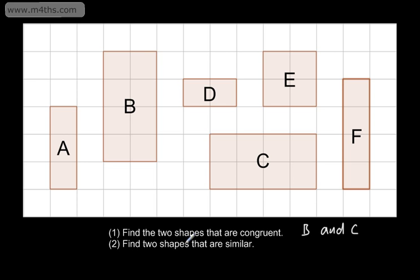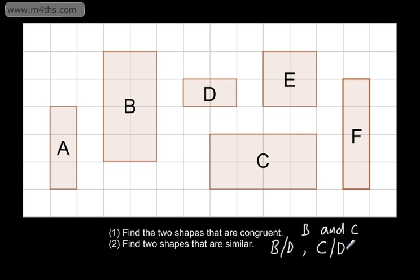Now we need to find two shapes that are similar — the same shape but possibly a different size. Going back to B, we can see it is a 2x4. Shape D is a 1x2 rectangle, so shape B is twice the size of shape D. These are similar shapes, so it could be B and D, or C and D since C is the same as B. You could also say B and C are similar, but they are also congruent since similarity doesn't necessarily require different sizes.